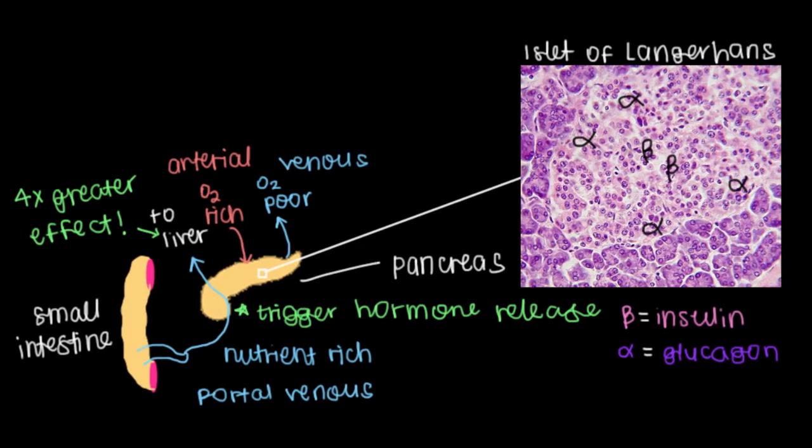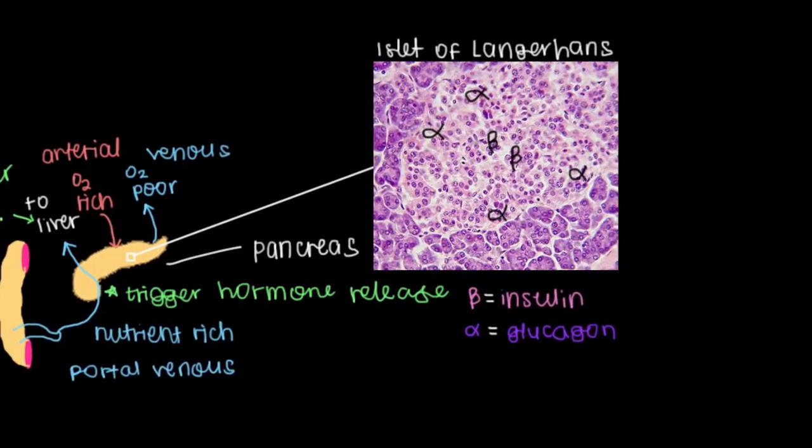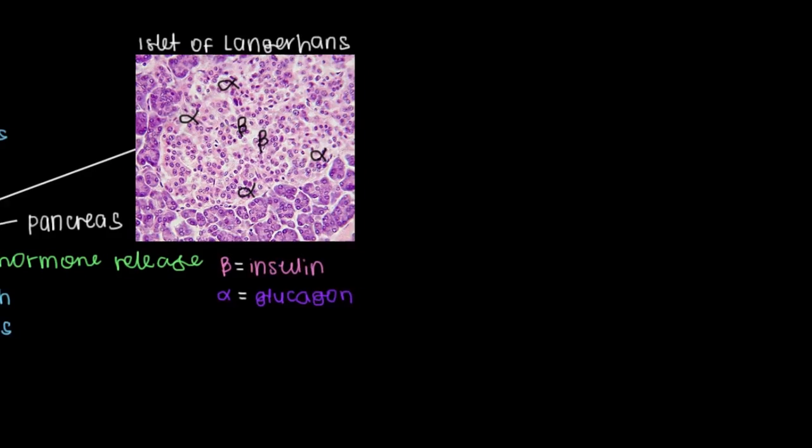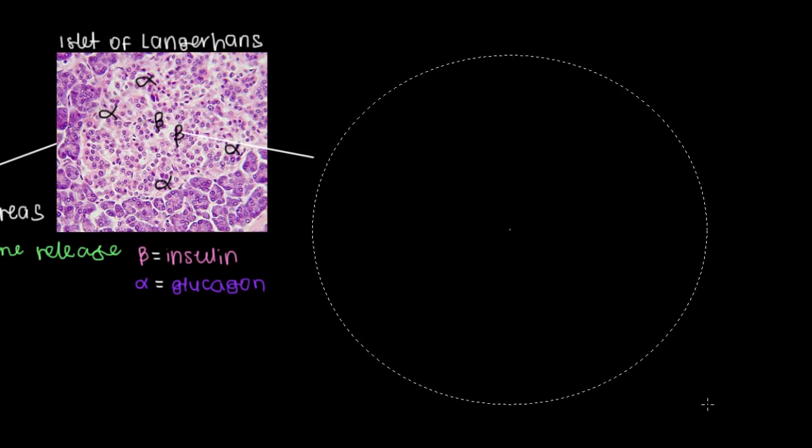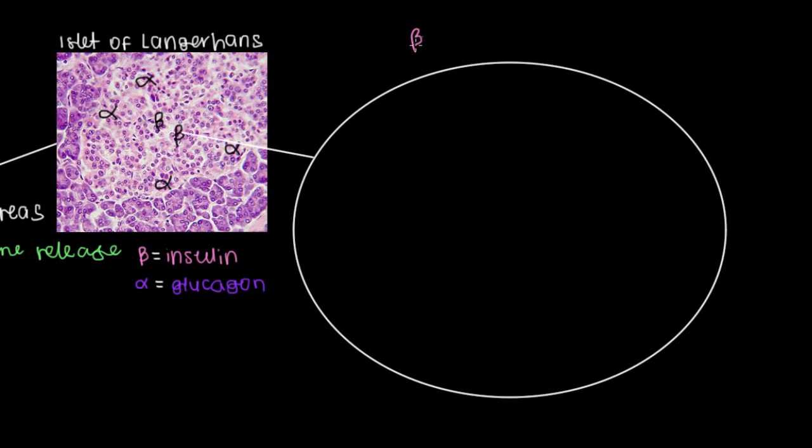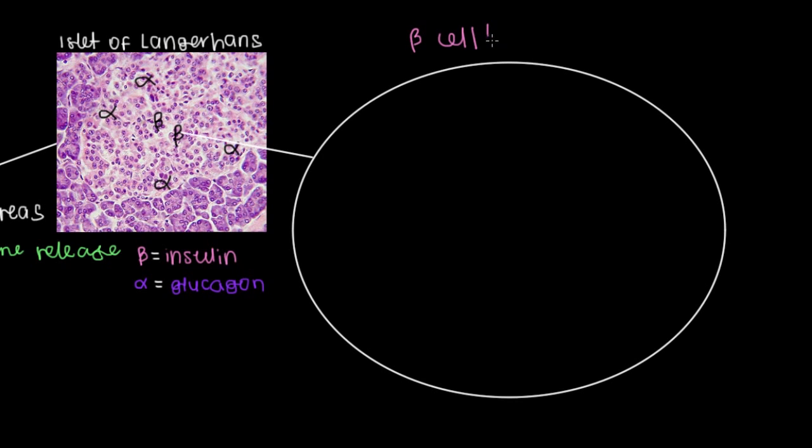And we can actually go into further detail about how beta cells, for instance, secrete insulin into the blood. Let's start by focusing on this beta cell right here. And I'll be sure to label this. This is a beta cell right here.